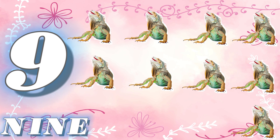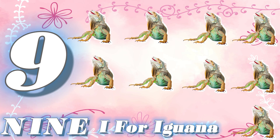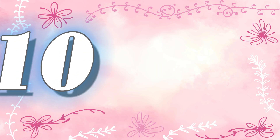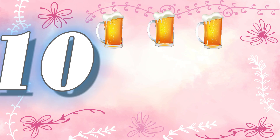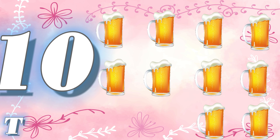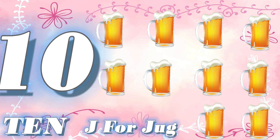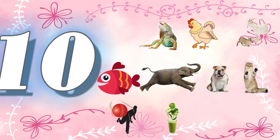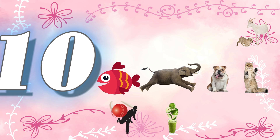9, 1 2 3 4 5 6 7 8 9. 10, T-E-N. 10, J for Jug. 10 9 8 7 6.